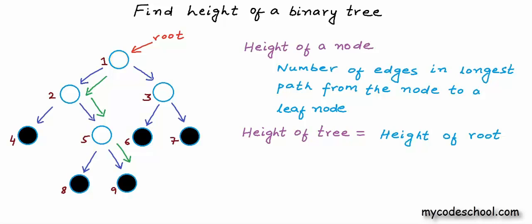Height of a leaf node would be 0. So if a tree has only 1 node, then the root node itself would be a leaf node and so height of the tree would be 0. So this is definition of height of a tree.